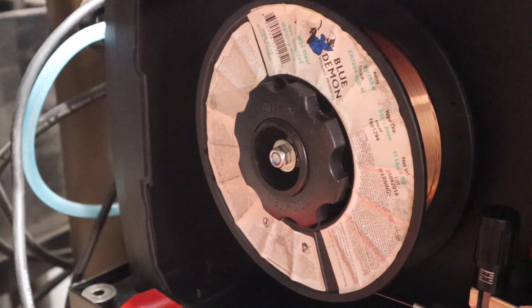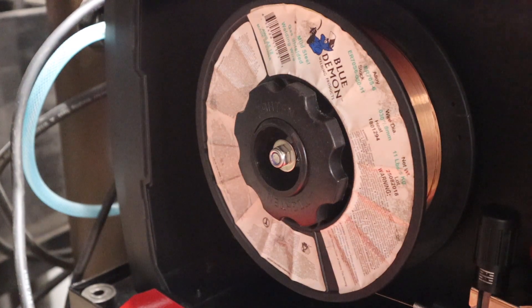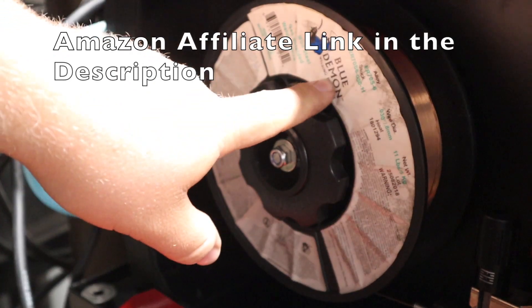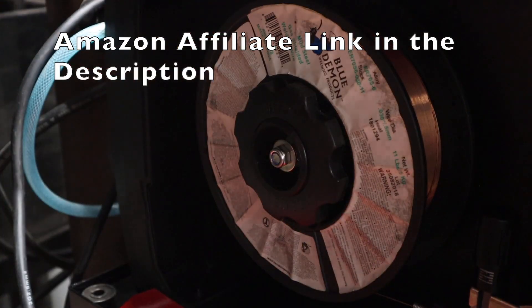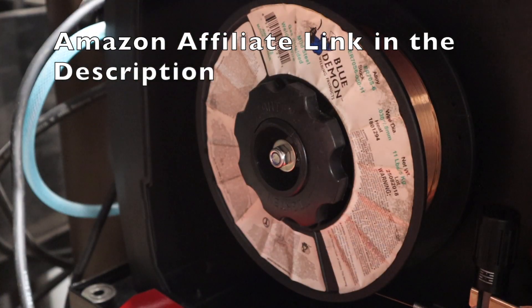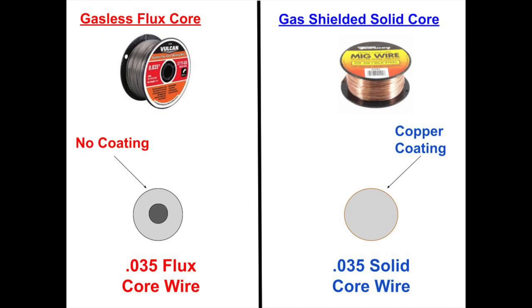I suppose the very last thing you're going to need in order to get going in MIG welding or gas shielded wire feed welding is some good solid core welding wire. Gasless flux core and solid core - usually your gasless flux core wire is going to be just a good shiny steel looking welding wire where your solid core wire is going to have a little bit of a copper coating on it.